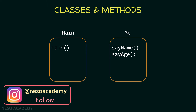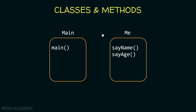This Me class will represent you, the programmer. The sayName method will print your name and the sayAge method will print your age. This class will be used in the Main class. Inside the main method, we want to call the sayName method and the sayAge method using the name of the Me class. The Me class doesn't have a main method — only the Main class will contain the main method.